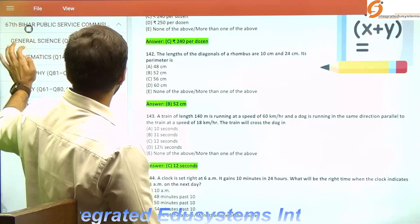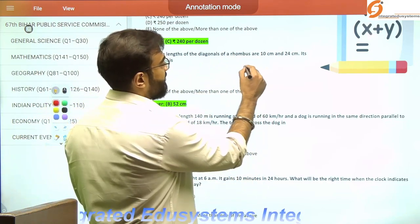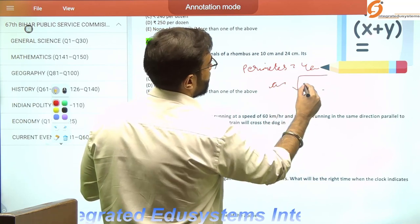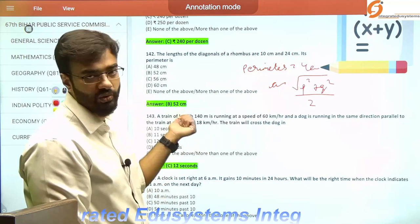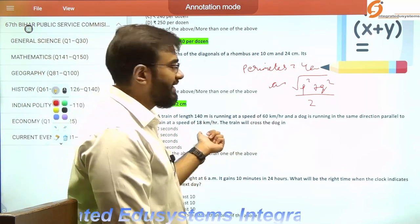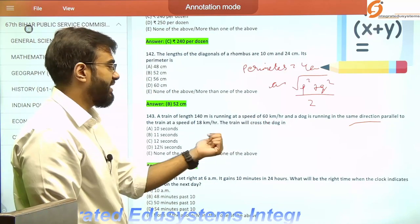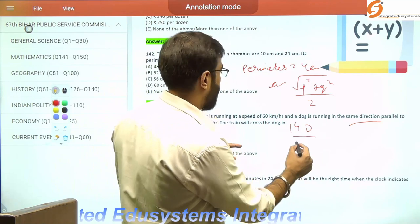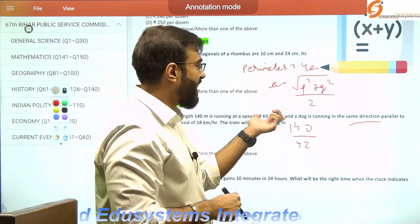Now the math section. I know you're adept at this, but I'll discuss shortcuts. She loses 25% by selling oranges at 150 per dozen, meaning she sold at 75% of original cost price. Divide 150 by 0.75 to get 200, the actual cost price. To sell at 20% profit: 200 × 1.2 = 240. For the rhombus, the perimeter formula is 4a where a = √(p² + q²)/2. For a train of length 140 meters...